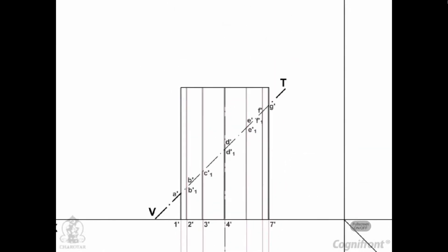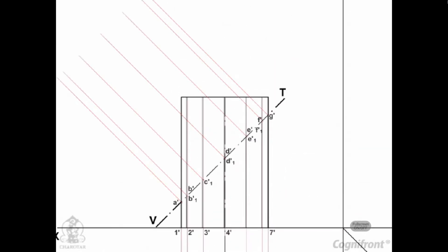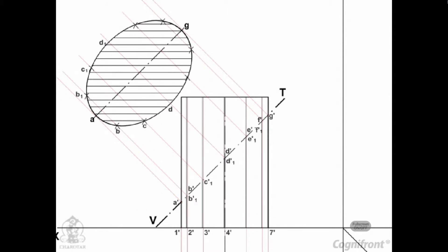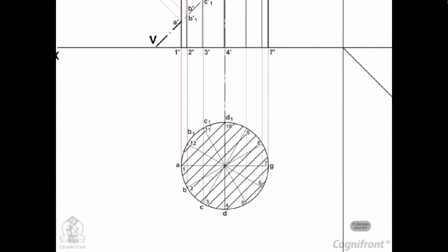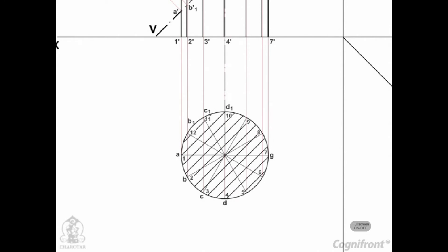The true shape of the section may be drawn around the center line AG drawn parallel to VT as shown. It is an ellipse, the major axis of which is equal to the length of the section plane, that is A dash G dash, and the minor axis equal to the diameter of the cylinder, that is DD1.